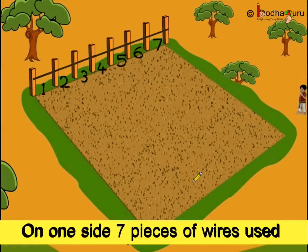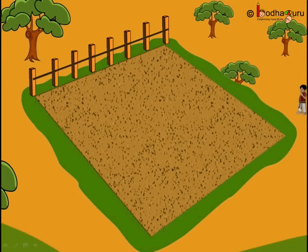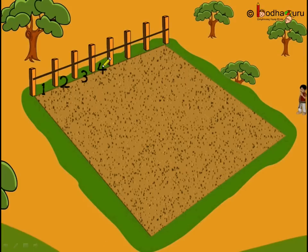Now let us see one by one how he did this. He started putting the pieces of wire along the fixed poles like this. This is the 1st piece, then 2nd, 3rd, 4th, 5th, 6th, 7th. So in all, 7 pieces of small wires were used to fence this side of the farm.